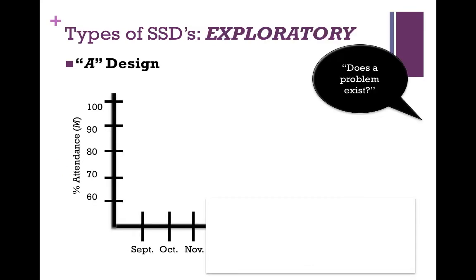There are four types of exploratory designs. The first is the A design, which answers the question: does a problem exist? The A design is often referred to as the baseline design — you collect baseline data to determine if attendance is really a problem. It's important when taking baseline measures to get at least three data points. In every discipline — physics, mathematics, social science, hard physical sciences — we aim for at least three data points to establish a trend or problem.